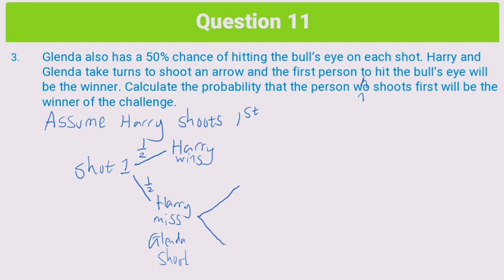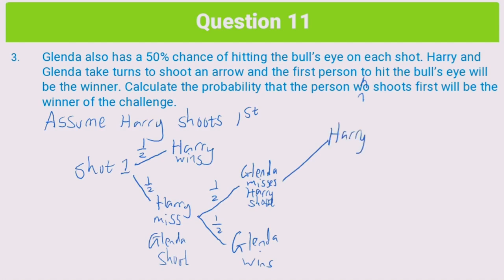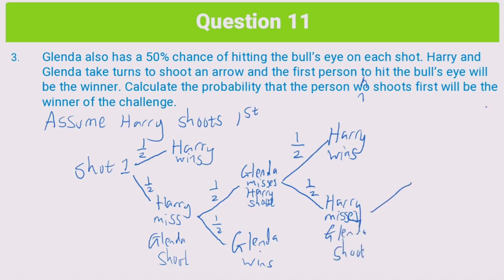Glenda wins with a half chance of that happening. There's also a 50% chance she misses, giving Harry another chance. So Glenda misses, and then Harry will shoot again. We have the scenario where Harry could win — hitting the target — also a 50% chance. But there's also the scenario where he misses again. Harry misses, also a 50% chance. Now if Harry misses, things cycle again: Glenda will shoot with a 50% chance of winning, and if she misses, Harry can shoot again.